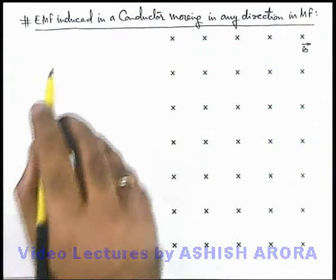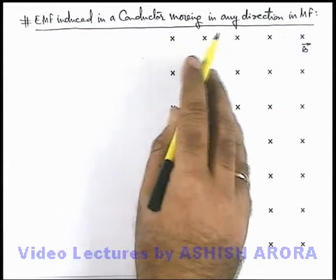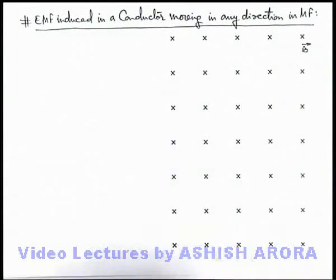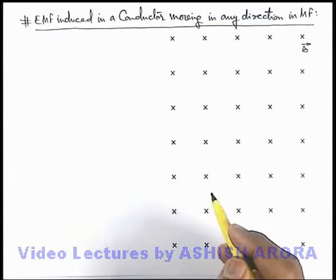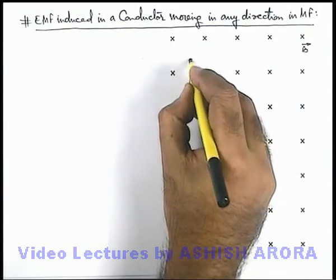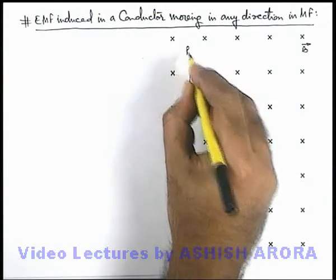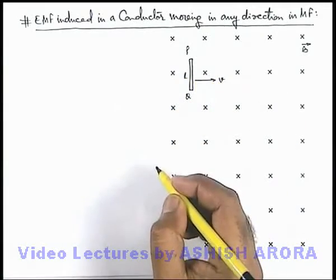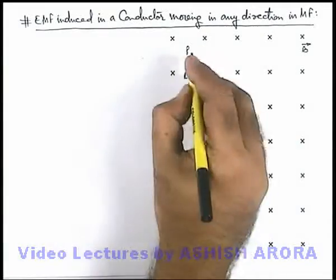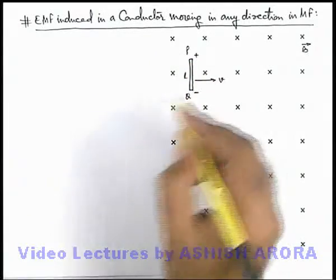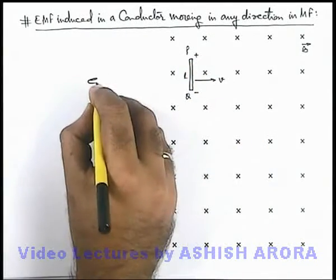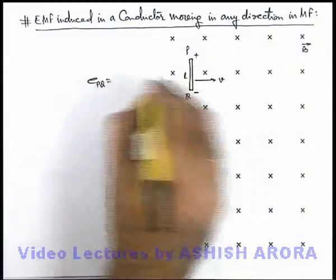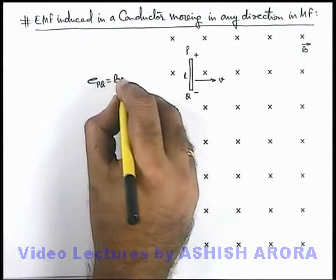Let us discuss the EMF induced in a conductor moving in any direction in a magnetic field. Consider a uniform magnetic field in the inward direction, and a conductor PQ of length l moving with a velocity v. By the right-hand palm rule, P will be at high potential and Q at low potential. The EMF induced across PQ can be written using the formula for motional EMF as BVL.